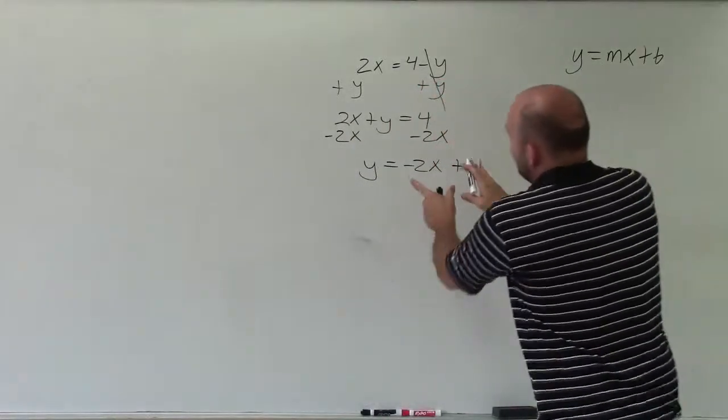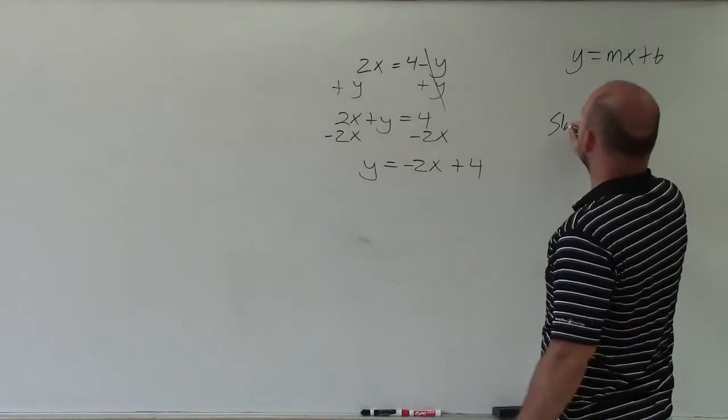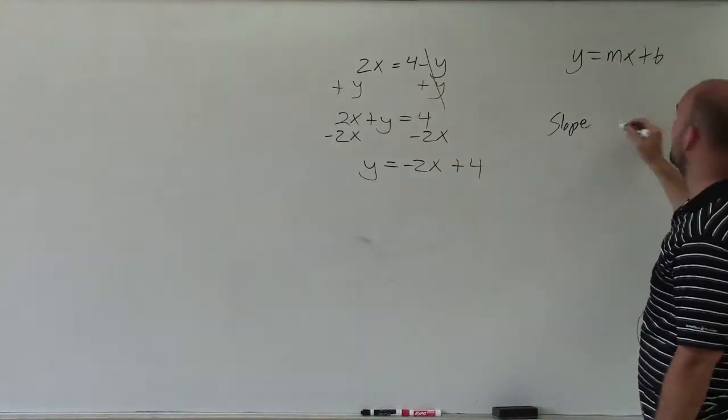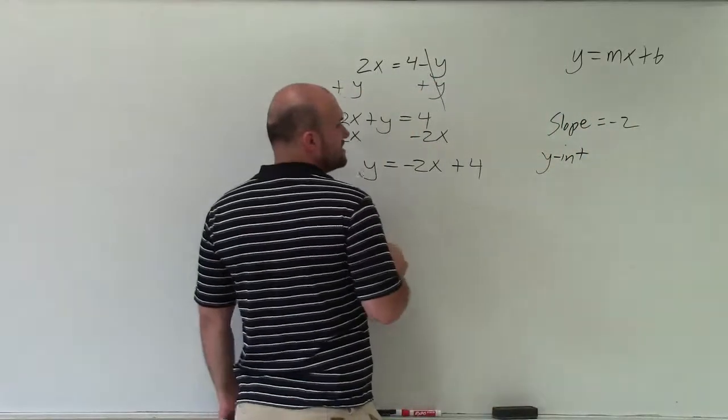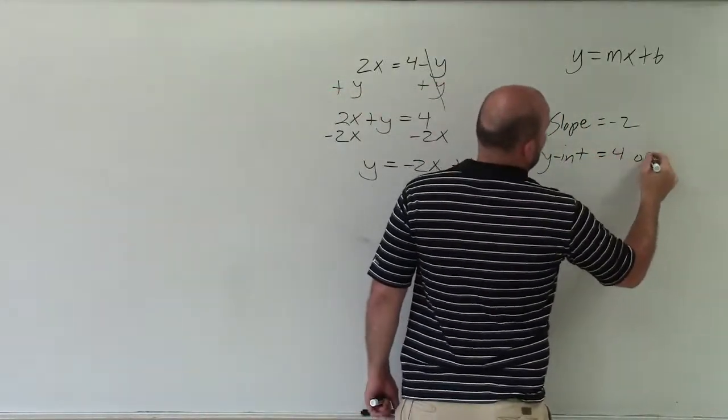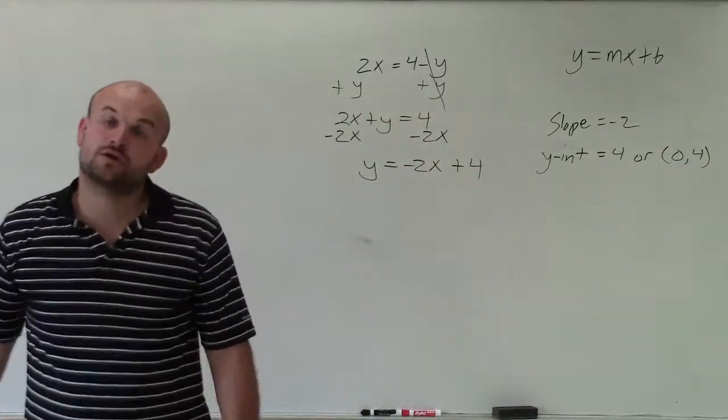So therefore, now, by comparing this equation to my slope-intercept equation, I can determine that the slope, which represents our m, is equal to negative 2. And our y-intercept, which you write and represent as b, is equal to 4, or writing it as a point 0 comma 4. So there you go, ladies and gentlemen.